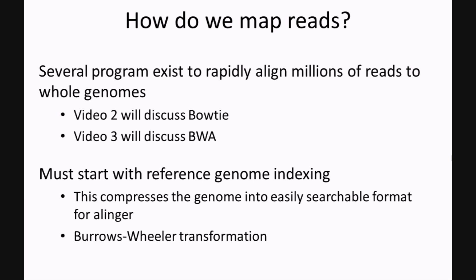Before running either of these aligners you must first index the reference genome. This is necessary in order to compress the genome into an easily searchable format for the aligner, and in most cases this will consist of a Burrows-Wheeler transformation. To understand why this is necessary, I'm going to give a very basic overview of how read alignment occurs without going into any details about algorithms.